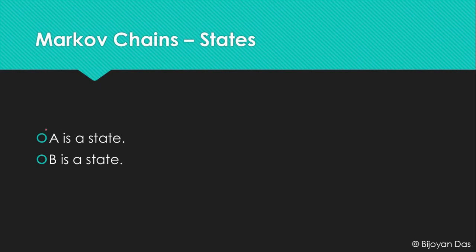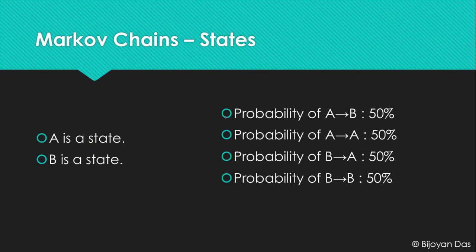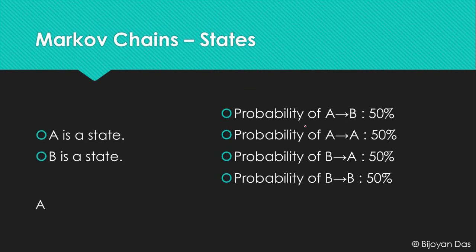Let's explain it more deeply. We have state A and state B with probabilities. The probability of going from state A to state B is 50%, and the probability of staying at state A is 50%. The probability of going from state B to state A is 50%, and the probability of staying at state B is 50%. Say your initial state is state A — based on these probabilities you can choose any one, because all have 50% probability. So you could stay at A and write A.